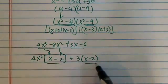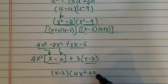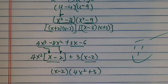Now this becomes the common factor: (x - 2)(4x² + 3). That's completely factored. Hope this helps. Have a confident day.